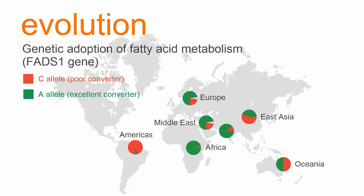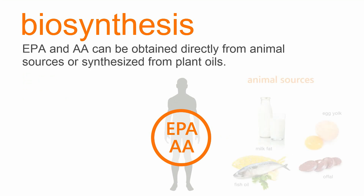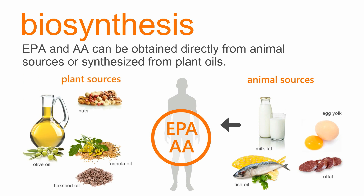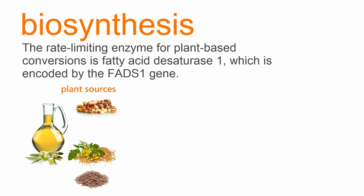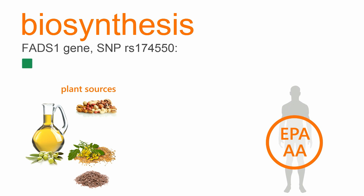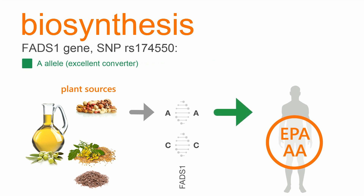One factor could have been what types of foods were available to provide EPA and AA. People can get EPA and AA directly from animal foods, such as egg yolks, whole milk, and fish, or they can synthesize them from plant oils, such as flax, canola, and olive. The process of converting plant oil precursors to EPA and AA requires three enzymes, and FADS1 is the rate-limiting enzyme in this process. The genotypes of the FADS1 gene strongly influence a person's ability to convert plant oils to EPA and AA. A person with A alleles is an excellent converter and can rely solely on plant oils to get sufficient EPA and AA.